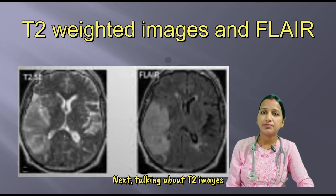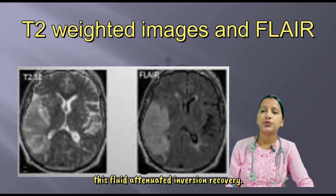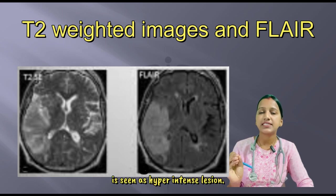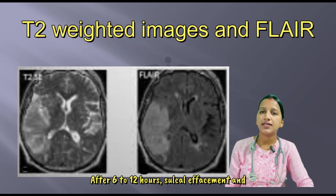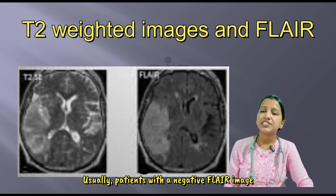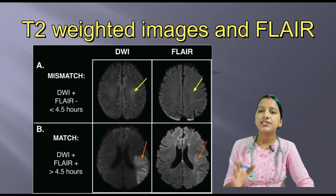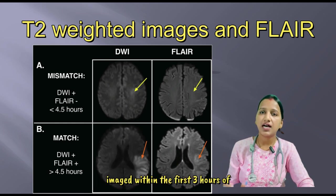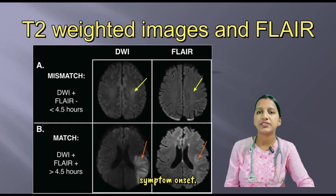Talking about T2 images and FLAIR — fluid attenuated inversion recovery. In this sequence, infarcted tissue is seen as hyper-intense. After 6 to 12 hours, sulcal effacement and mass effect can be visualized. Patients with a negative FLAIR image are usually considered in 90% of cases as being imaged within the first 3 hours of symptom onset.